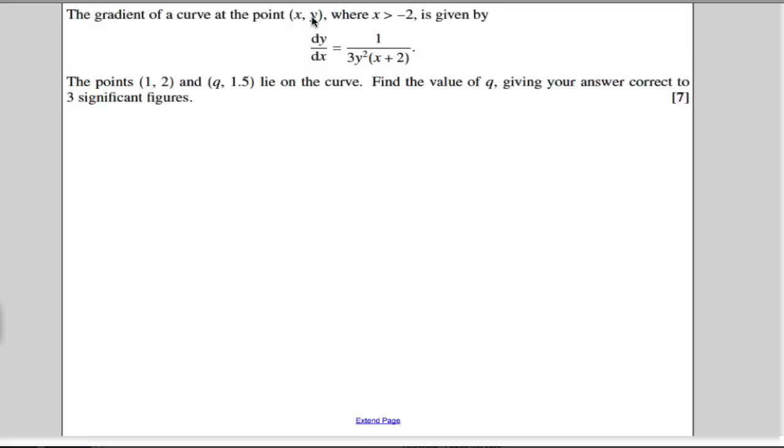It tells us that the gradient of the curve at the point xy, where x is bigger than minus 2, is given by the following. This is a differential equation because it's got a differential and the variables. It gives us that the points 1, 2 and q, 1.5, lie on the curve. Find the value of q to 1 decimal place.